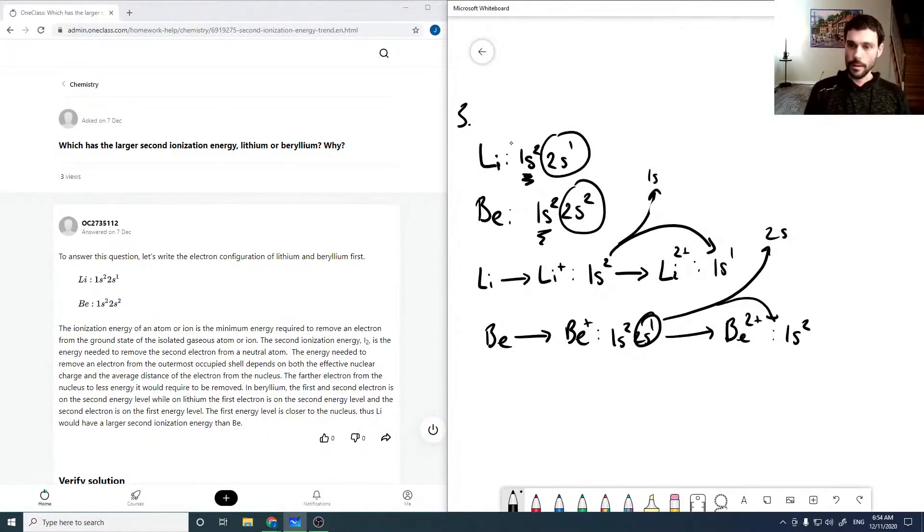So in any case, a 2s electron is going to be further from the nucleus. So if we look at our energies, ionization energy, remember, is the difference in energy between completely removing it and where it lies in the shell.